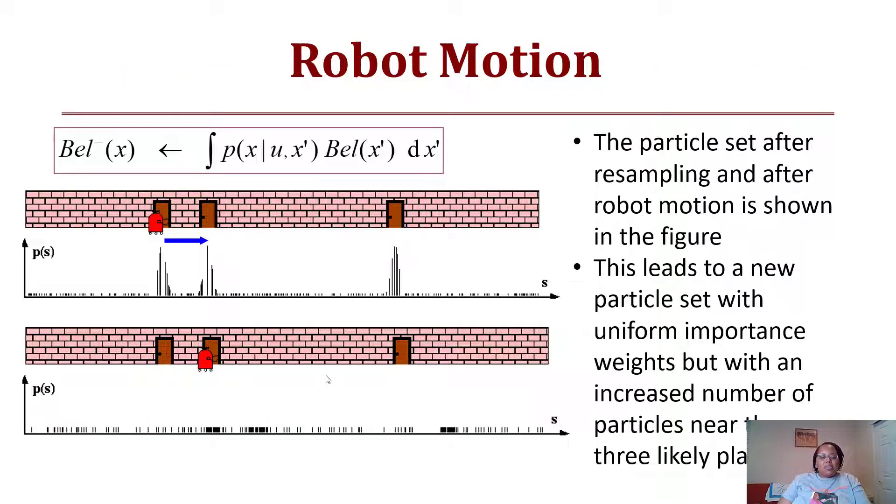Then the robot starts to move. That blue arrow now represents our motion model where the robot travels. The uniform weights may happen again because until it makes another sensing point, it's not going to be able to update the weights. The particle set after resampling and robot motion leads to a new particle set with uniform distribution but with an increased number of particles near the likely places.